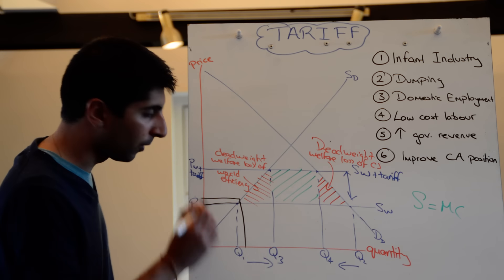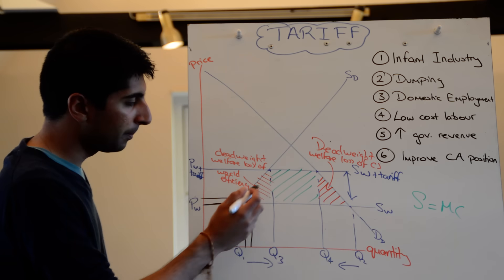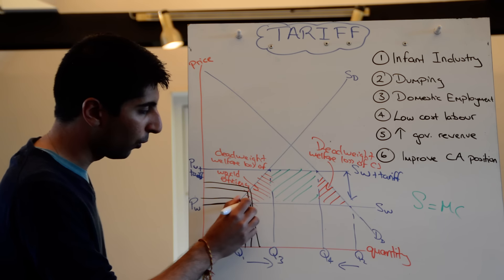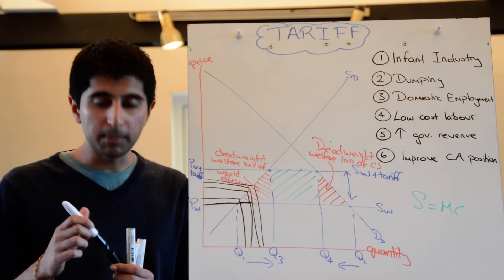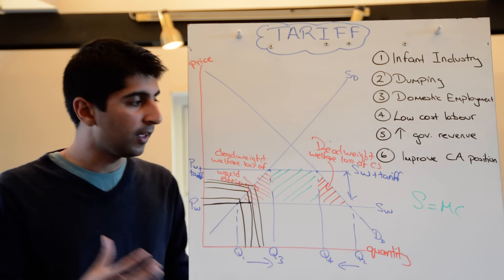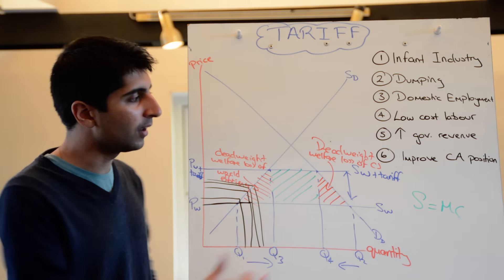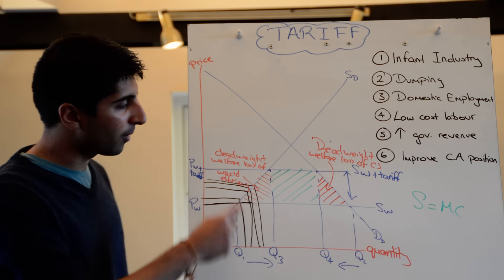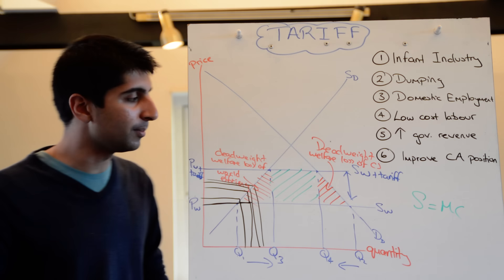So to produce that extra unit, it would have cost world suppliers that cost. But it's cost domestic suppliers a bit more. The unit after, it would have cost world suppliers that much again, same cost. But it's cost domestic suppliers more. And that point is true all the way until Q3. So every extra unit being produced from Q1 to Q3 is being produced at an extra cost when domestic suppliers are producing it than if world suppliers are producing it. So in that sense, resources are being provided to inefficient producers when they should have been going to the world suppliers. They should have been the ones producing those units, but they aren't. So that triangle there represents a loss, a deadweight loss of world efficiency. Okay, so these are the three little chunks you need to be aware of.